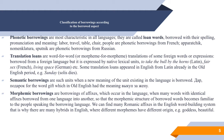In phonetic borrowings, each sound in the borrowed word is substituted by the corresponding sound of the borrowing language. In some cases, spelling might be changed and the structure of the word can also be changed. For example, the words 'labour', 'table', 'travel', 'chair', and 'people' are phonetic borrowings from French. From Russian, such words as 'manufaktura' and 'sputnik' are phonetic borrowings. 'Bank', 'soprano', and 'duet' are phonetic borrowings from Italian.